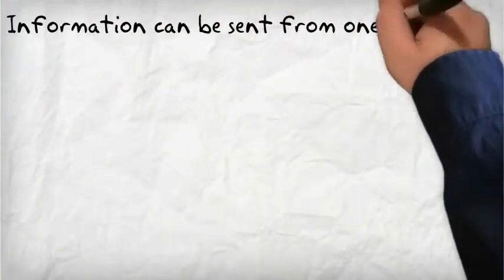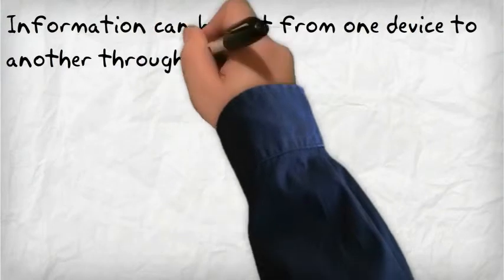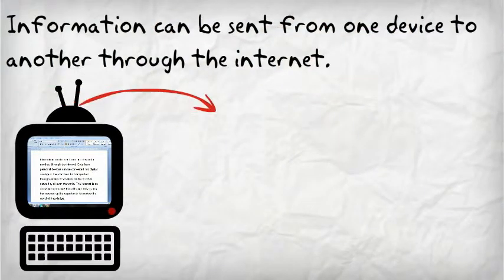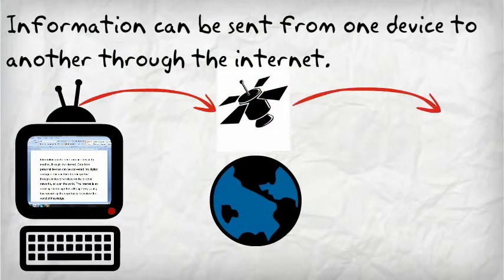Information can be sent from one device to another through the internet. Data from personal devices can be converted into digital analogue. This can then be transported through cables or wireless media to other networks all over the world.